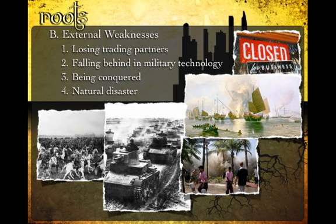In summary, you have the seven core components of how a civilization rises, the five key aspects of what it takes for a civilization to sustain itself, and the two key categories — internal weaknesses and external weaknesses — that lead to civilizations collapsing.